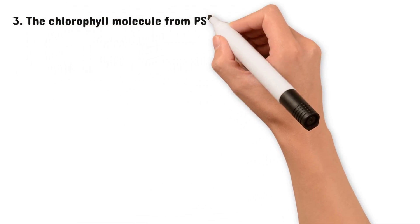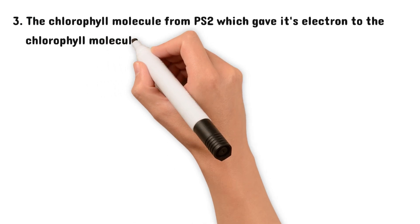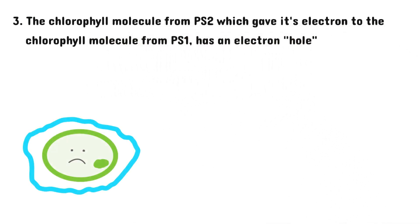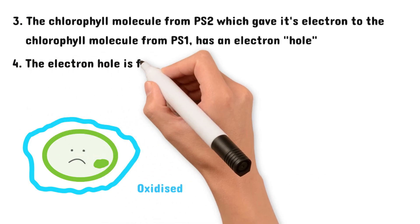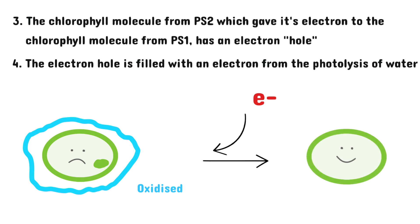Now remember the chlorophyll molecule from photosystem II, which gave up its electron to the chlorophyll molecule from photosystem I. It has an electron hole now, which basically means it's missing an electron. You could also say that it's oxidized. This electron hole is filled with an electron which is released from the photolysis of water.